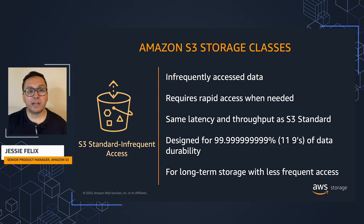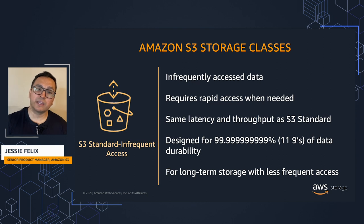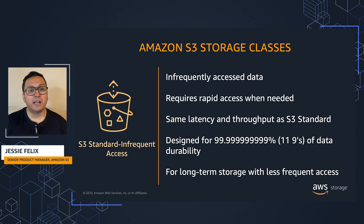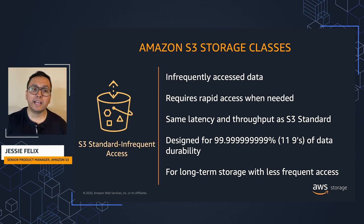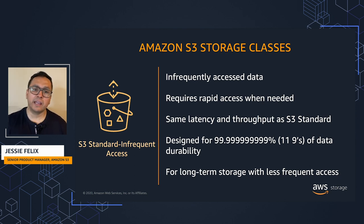Amazon S3 Standard Infrequent Access is for data that is accessed less frequently, but requires immediate access when needed. S3 Standard IA has the same latency, throughput, and durability as S3 Standard, but with a lower price and per-gigabyte retrieval fee. Common use cases for Standard IA include backup of critical data and disaster recovery environments.